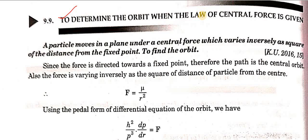To determine the orbit when the law of central force is given. We have checked the orbit of different types of elliptic and hyperbolic laws of force. Now we reverse the work: given the law of central force, we check which path the particle moves along. A particle moves in a plane under a central force which varies inversely as the square of distance from the fixed point.